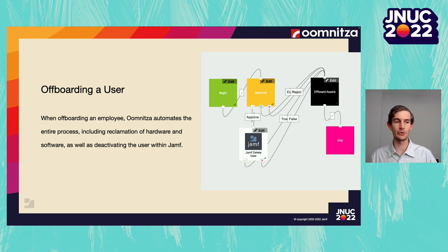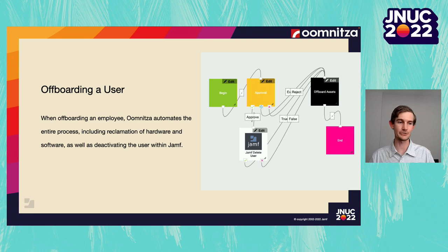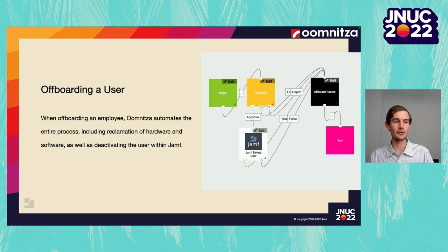There are plenty of stories where employees have been terminated but still show up on payroll a year later, or where a salesperson leaves and the company finds out a month later that all data around their deals was gone. According to a recent study by Beyond Identity, approximately 25% of employees can still access their past workplace accounts and emails. Over 41% of those employees admitted to sharing their former workplace logins. Offboarding employees presents a serious data risk: 70% of intellectual property theft occurs within 90 days before an employee's resignation announcement. And despite these risks, only 29% of organizations have a formal offboarding process.